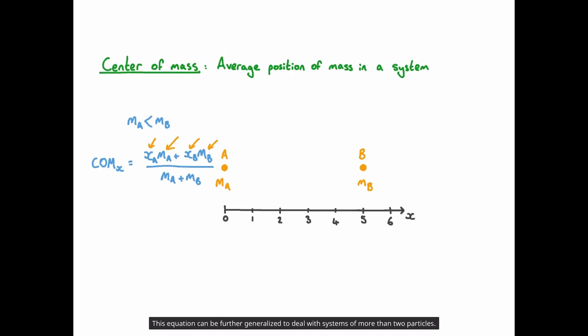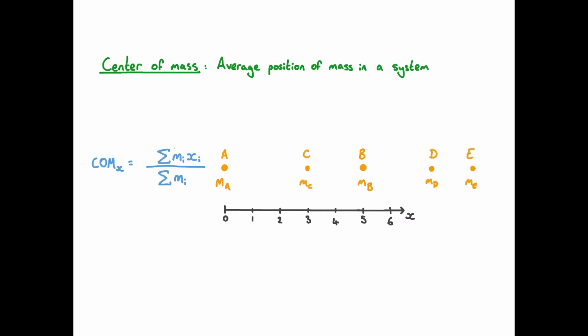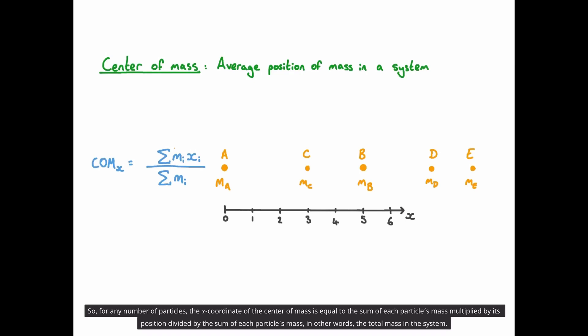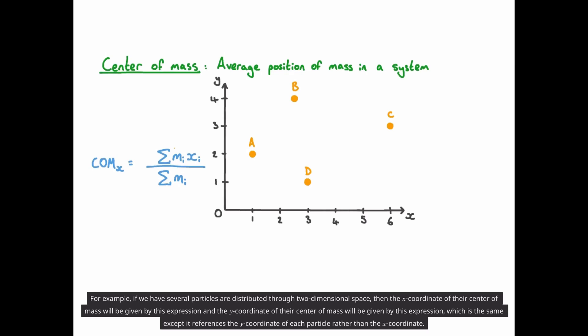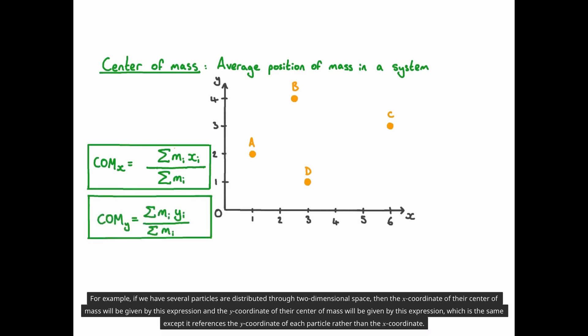This equation can be further generalised to deal with systems of more than two particles. For any number of particles, the x-coordinate of the centre of mass is equal to the sum of each particle's mass multiplied by its position, divided by the sum of each particle's mass — in other words, the total mass in the system. This idea can easily be extended to more than one dimension. For example, if we have several particles distributed through two-dimensional space, then the x-coordinate of their centre of mass will be given by this expression, and the y-coordinate of their centre of mass will be given by a similar expression that references the y-coordinate of each particle rather than the x-coordinate.